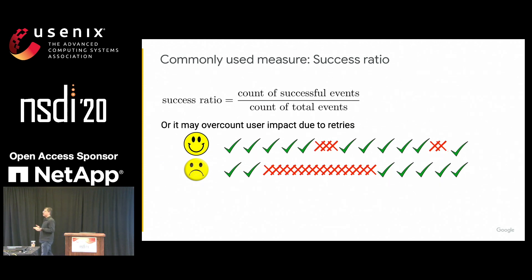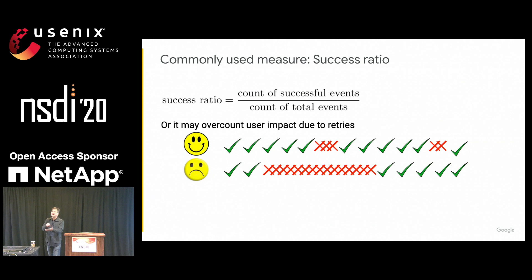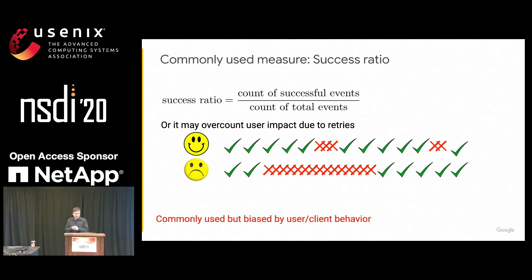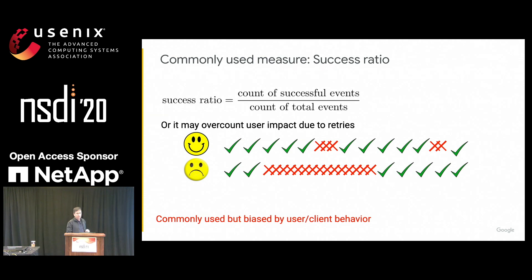Success ratio may also overcount user impact. When the system is down, users change their behavior — they keep hitting the button over and over again to get it to succeed. So the inter-arrival time of requests during outages is fundamentally different from when the system is up. In this way it can overcount impact. Users think in terms of how long the system has been down rather than counts, so it's not necessarily modeling what users care about.